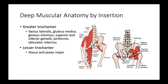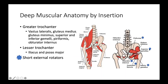Deep muscle anatomy can also be understood by insertion sites. At the greater trochanter, you have the vastus lateralis, gluteus medius, gluteus minimus, superior and inferior gemelli, piriformis, and obturator internus. At the lesser trochanter, the psoas major and iliacus come together to form a conjoined tendon. The short external rotators are important when doing a posterior approach to a hip replacement because you have to divide them, and the sciatic nerve runs right under the piriformis.